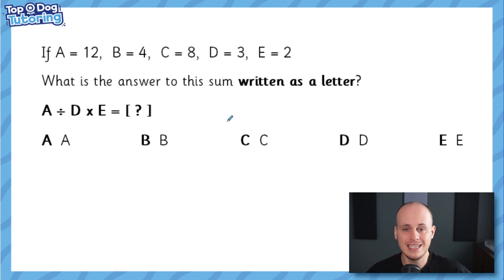So let's take a look at this first one. It's a very straightforward question that we call substitution. You are told the values of A, B, C, D and E. For example, A is worth 12, B is 4 and so on. And then it simply says this, what is the answer to this sum written as a letter? And you've got to substitute in A divided by D times E. Now you'll be pleased to know that we are not testing you on the order of operations, which is something you learn in year six, which tells you which part of the equation you should be doing first.